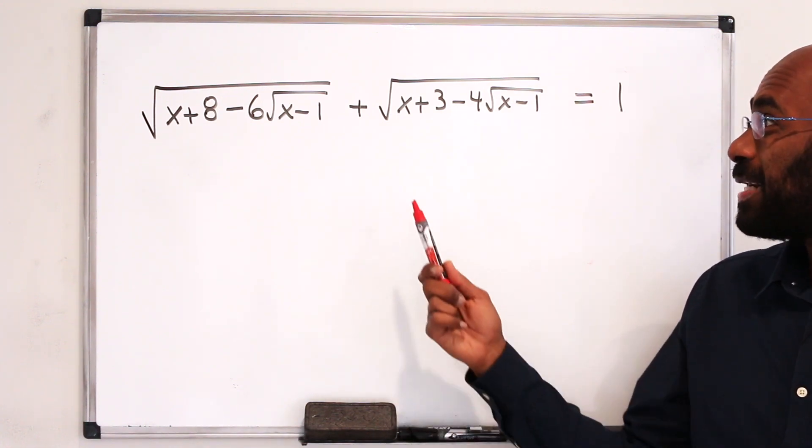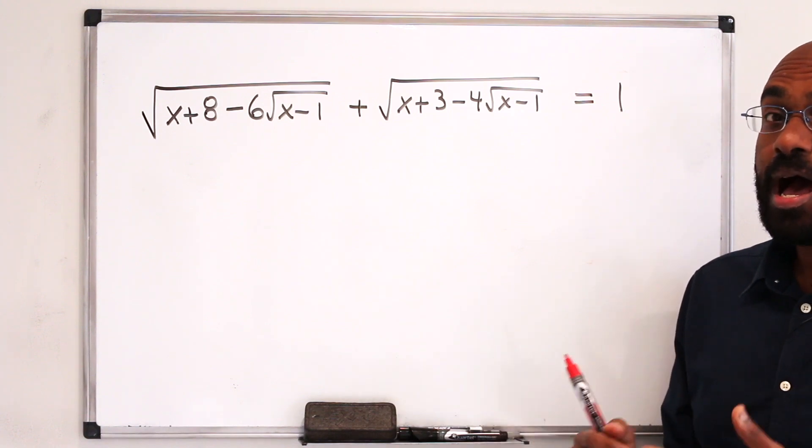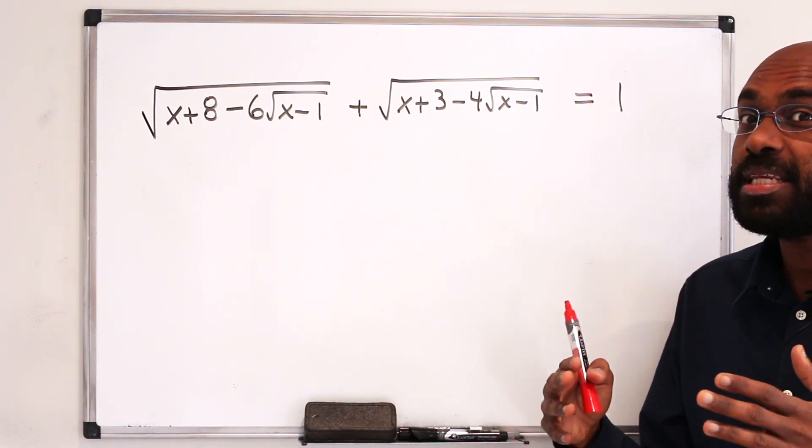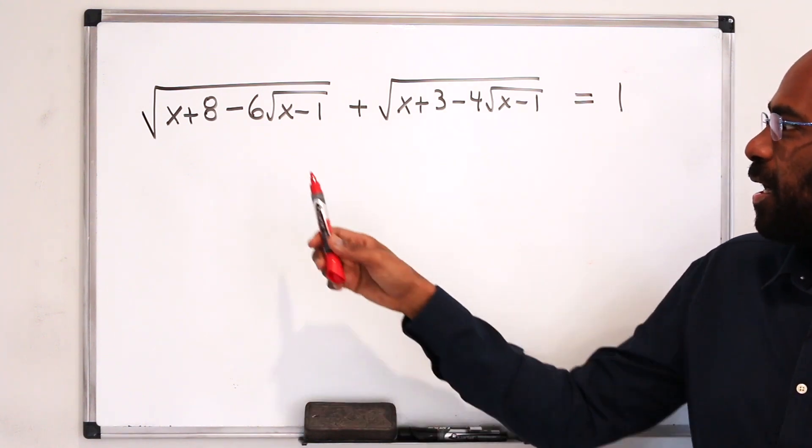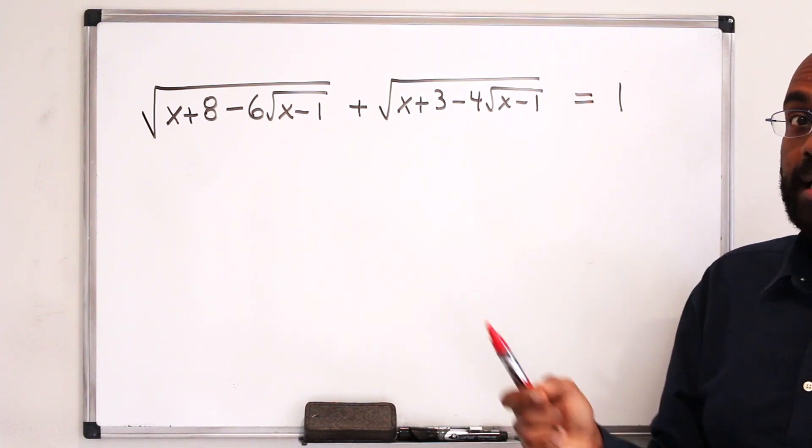In today's video, I want to look at this surprising equation right over here. Now when I actually tried to solve it, I had a feeling of what the answer might be, and the answer was totally different than what I was expecting. So give this a try. I suggest substituting u for the square root of x minus 1, and see what you get.